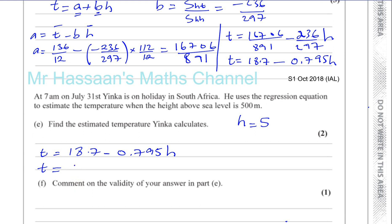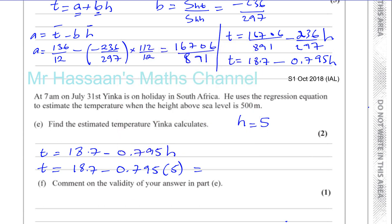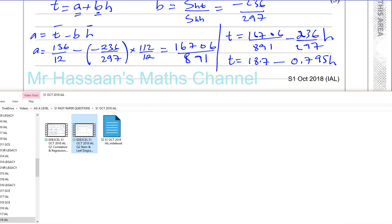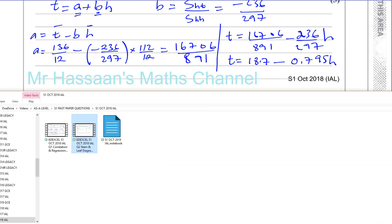So you have to put 18.7 minus 0.795 times 5, not 500. If you put 500, you get a ridiculously low answer, which is colder than the North Pole. Let's get my calculator.